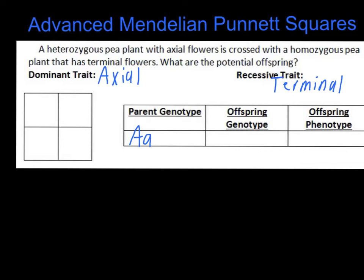The other parent is a homozygous pea plant that has terminal flowers. Since terminal is recessive, we know this one is going to be lowercase a. Since it's homozygous — and remember, the prefix 'homo' tells us they're the same — it's lowercase a, lowercase a for our second parent.